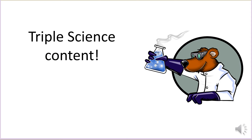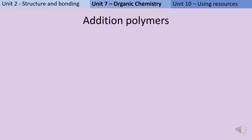The next few slides are only relevant if you're taking GCSE chemistry, or what we sometimes call triple science. So if you're taking GCSE combined science, or if you're just wanting to revise Unit 2 and not anything from Unit 7 or Unit 10, stop watching now. For Unit 7, you need to be able to identify whether polymers are going to be addition polymers or condensation polymers.